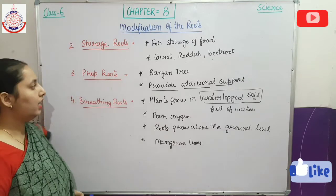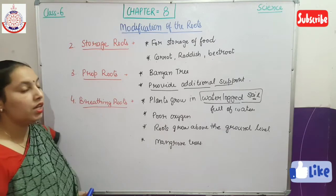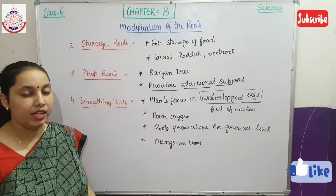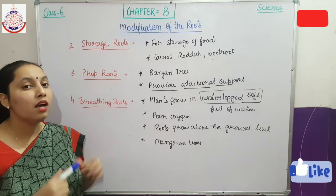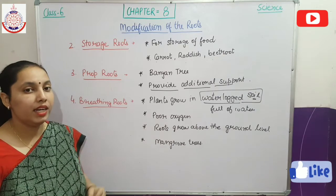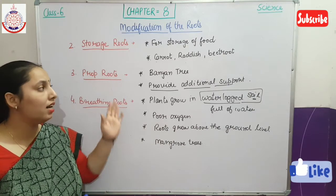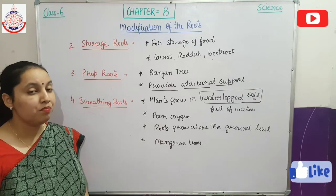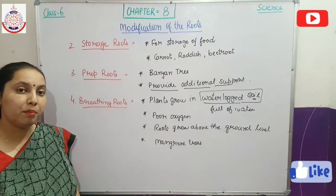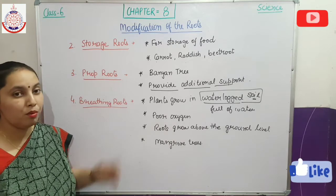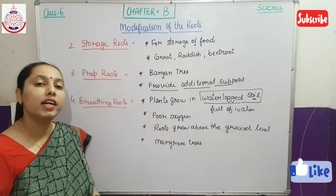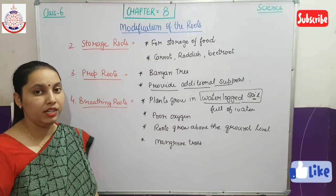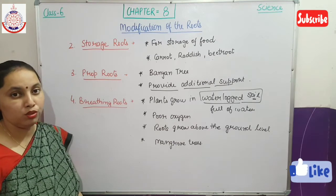The third category is prop roots. Everyone has seen a big banyan tree with many, many roots. Why are there so many roots in the banyan tree? They are there for support — they provide additional support to the tree. That type of root present in the banyan tree is known as prop roots.